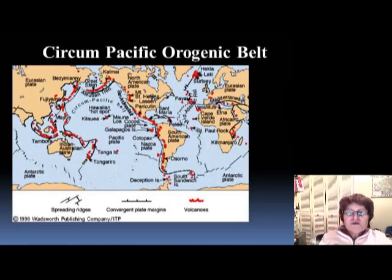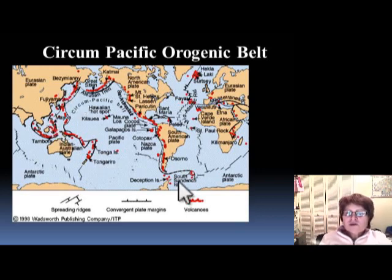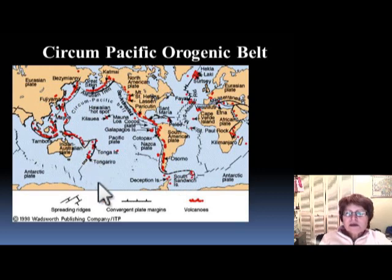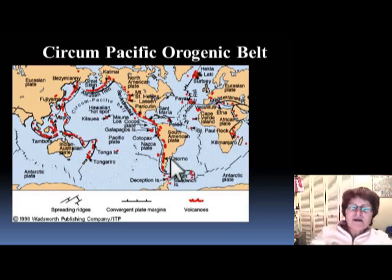Let's move to the circum-Pacific orogenic belt, which surrounds the entire Pacific Ocean. The triangles on this map show all the active volcanoes in this region. This whole area is very, very active with a lot of earthquakes as well.